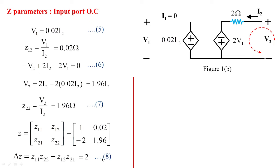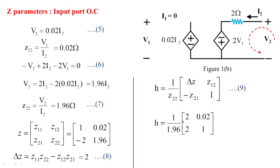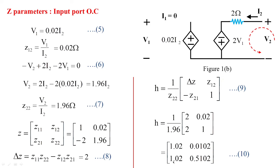Using the h-parameters-from-z-parameters formula and substituting z22 = 1.96, delta_z = 2, z21 = minus 2, z12 = 0.02, and z11 = 1, the h-parameter matrix becomes: h11 = 1.02, h12 = 0.0102, h21 = 1.02, h22 = 0.5102. This result is recorded as equation 10 and will be cross-checked using the actual hybrid parameter approach.